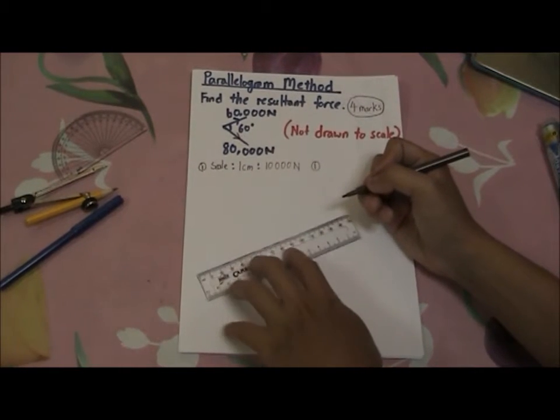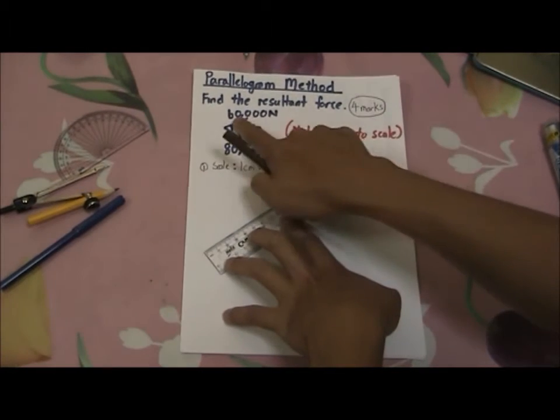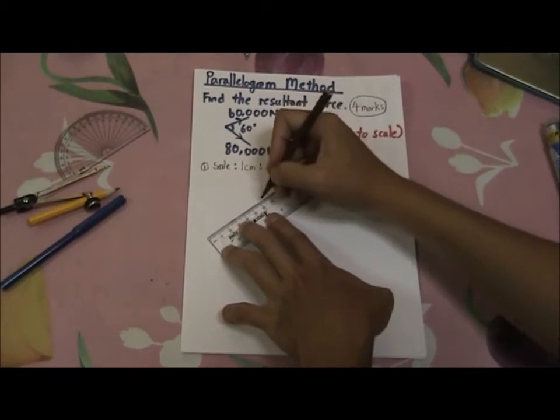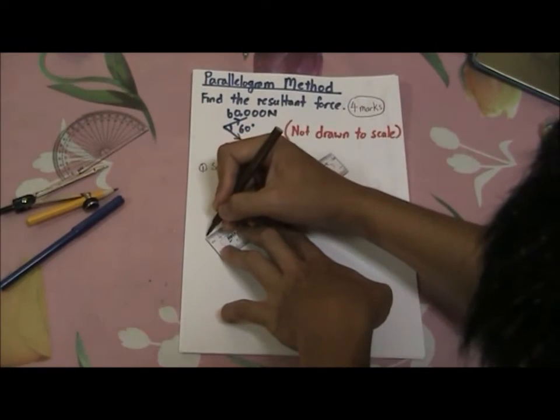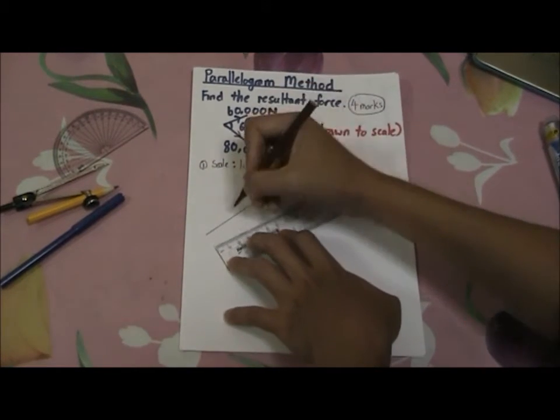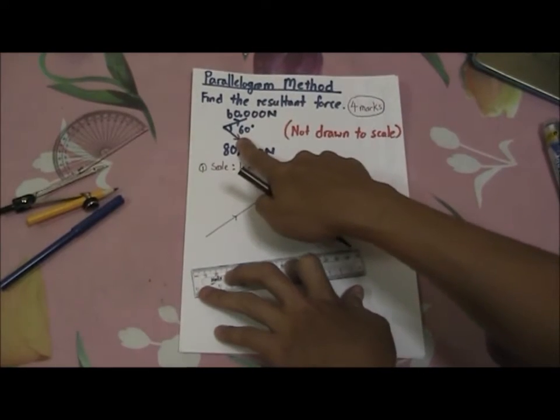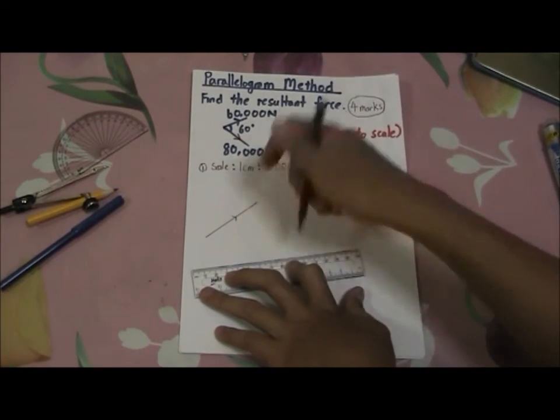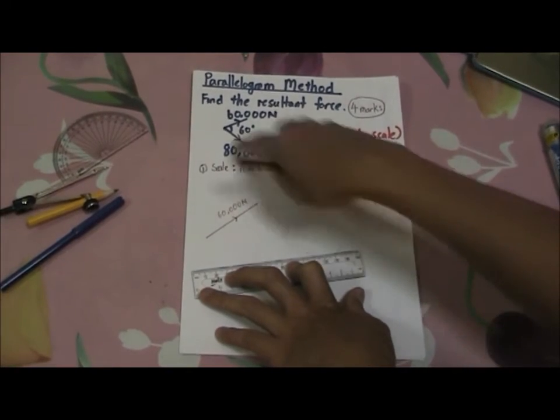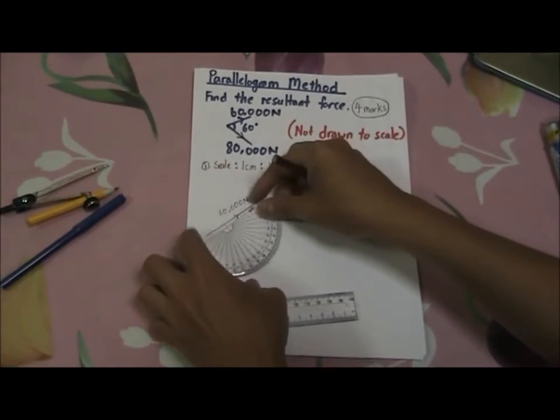Now let's move on to the second mark. It will be the drawing of the parallelogram. Since this is 60,000, I need to draw 6 cm to represent it. From here to here, 6 cm. And there is an angle of 60 degrees in between the 60,000 newton and 80,000 newton. So let's use a protractor and measure 60 degrees.